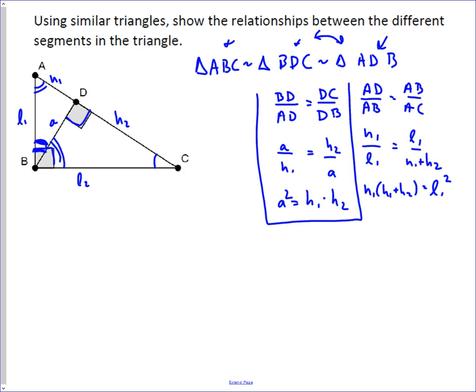And so that means that the square of a leg of a right triangle equals H1, the part of the hypotenuse on that side of the leg, times the entire hypotenuse, which is H1 plus H2.